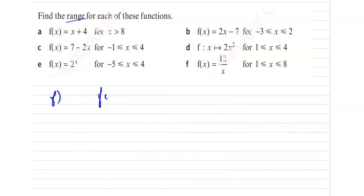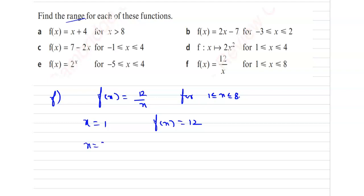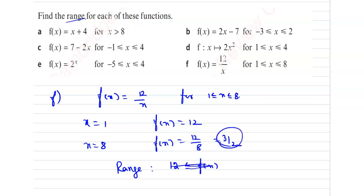The last one: we are given f of x equal to 12 by x for 1 less than or equal to x less than or equal to 8. Take x equal to 1. So, f of x is 12. And take x equal to 8. So, f of x is 12 by 8, which is 3 by 2. Therefore, the minimum value is 3 by 2. So we can write the range as 3 by 2 less than or equal to f of x less than or equal to 12. So, this is the range.